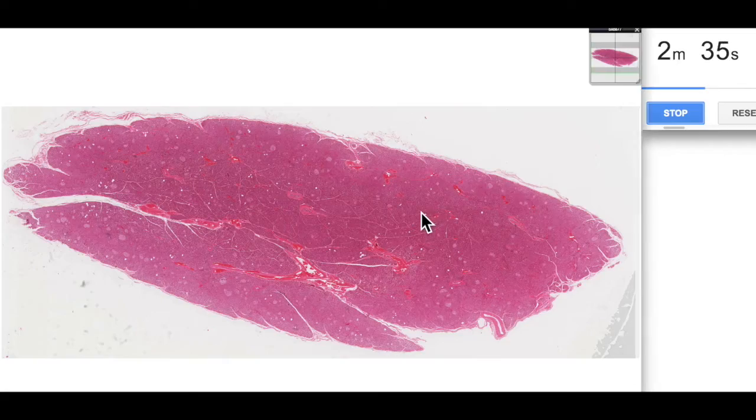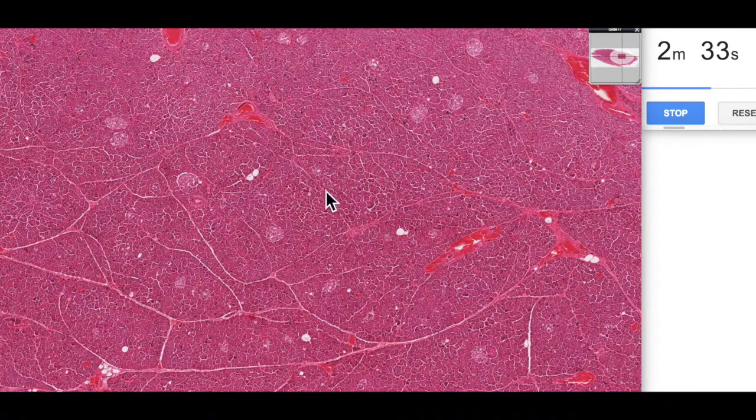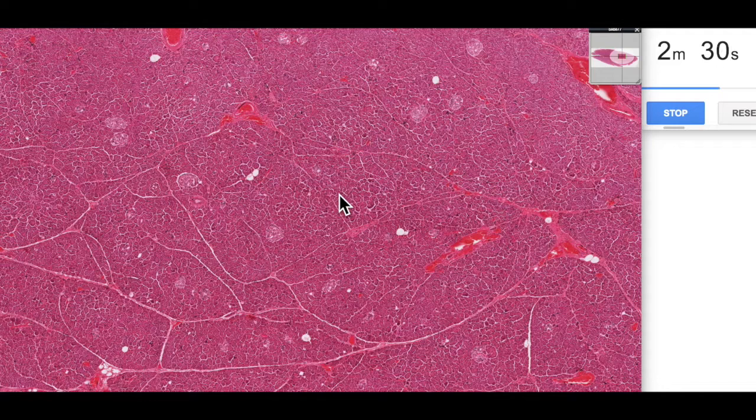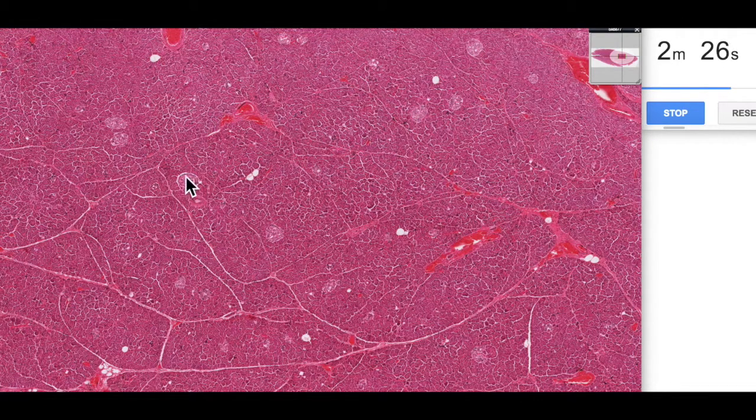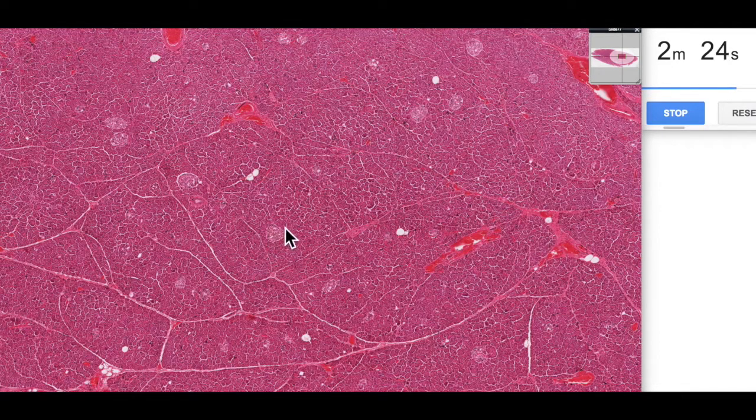But if we zoom in we can actually see it's quite a basophilic tissue found within the gland and then scattered amongst all of this basophilic tissue we have these pale staining circular regions.